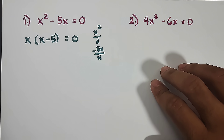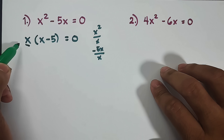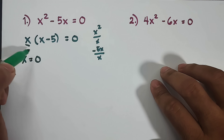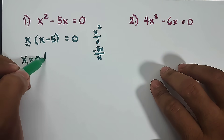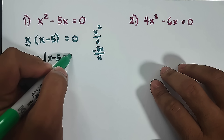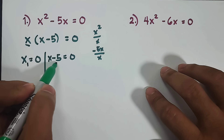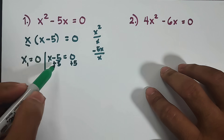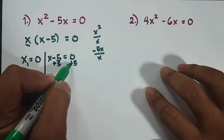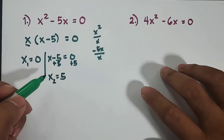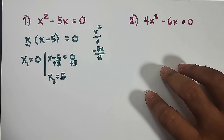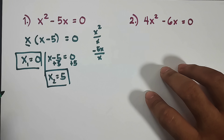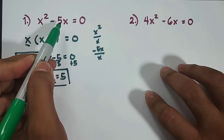The next step after factoring is to equate both factors by 0. So the first factor gives x is equal to 0 — this is already considered an answer, x sub 1. For the next factor, x minus 5 equals 0. We add 5 to both sides, giving x equals 0 plus 5, which is 5. So x sub 1 is equal to 0 and x sub 2 is equal to 5. These are the roots or solutions of x squared minus 5x equals 0.